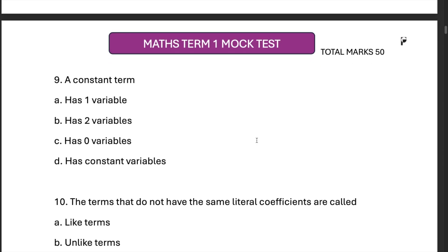A constant term has one variable, two variables, zero variables, or has constant variables. A constant term has no variables, zero variables. So the answer is C.